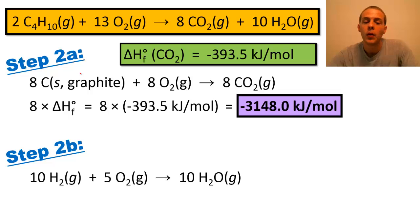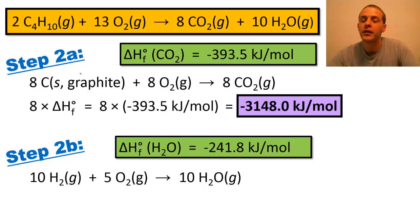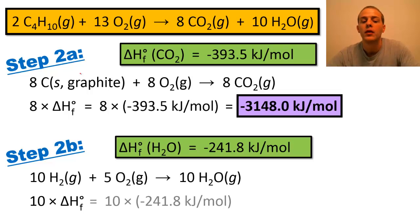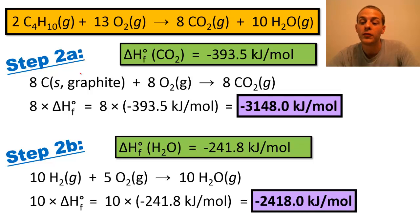Step 2a is the formation of eight moles of CO₂. We look up the standard heat of formation for CO₂ and find it to be negative 393.5 kilojoules per mole. To get the standard heat for step 2a, we multiply by eight because we have eight moles of CO₂: eight times negative 393.5 kilojoules per mole gives us negative 3148.0 kilojoules per mole. For step 2b, the standard enthalpy of formation for water is negative 241.8 kilojoules per mole. We multiply by 10 because we have 10 moles of water: 10 times negative 241.8 kilojoules per mole gives us negative 2418.0 kilojoules per mole.